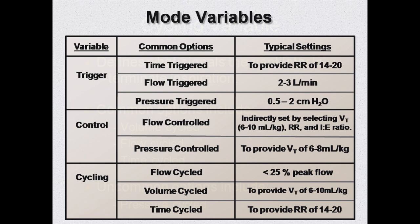Here is a summary of common options for the three mode variables. A mode can either be time triggered, flow triggered, or pressure triggered. It could be flow controlled or pressure controlled, and it could be flow cycled, volume cycled, or time cycled. Typical settings for these variables are listed to the right.